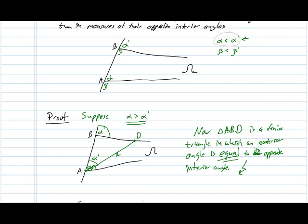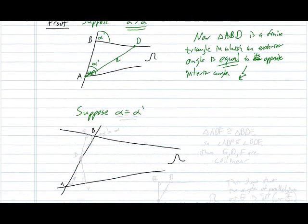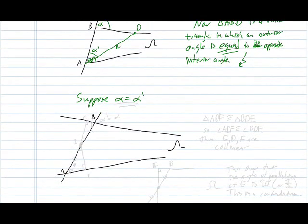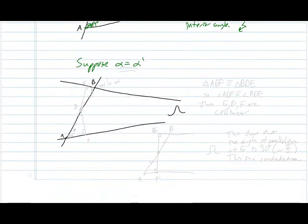But maybe, just maybe, alpha can be equal to alpha prime. And this proof would have been extremely poorly planned if that turned out to be the case. So there must be a contradiction here somewhere. And what we're going to do is we're going to construct. So here is our alpha prime, and here is our alpha. And we're going to assume that these two angles are equal.